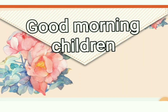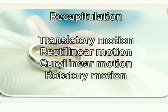Good morning children, this is Vanaja teacher and I welcome you all for your next part of your lesson on motion and time. Before entering into today's content, I want to recapitulate the previous class. We have learned about two types of motions: translatory and rotatory. In translatory motion, it has been divided into two types: rectilinear and curvilinear. We studied the definitions and examples for all types of motions.